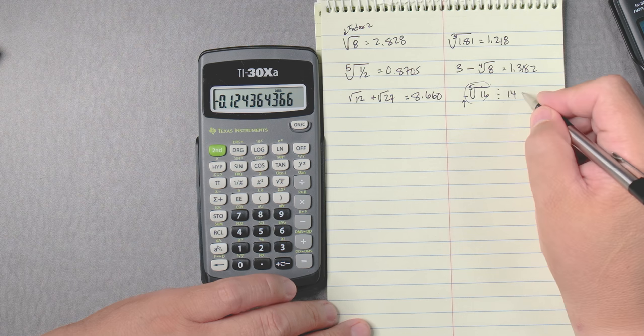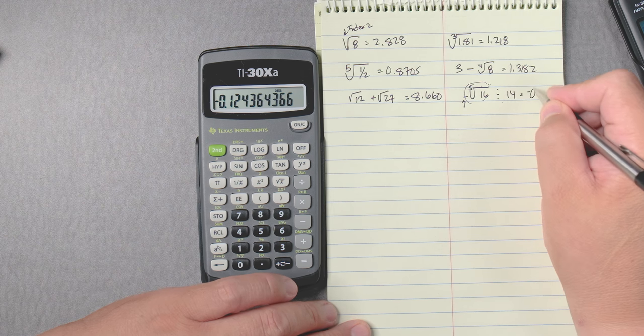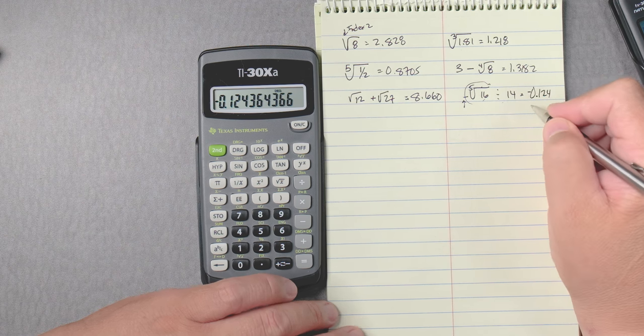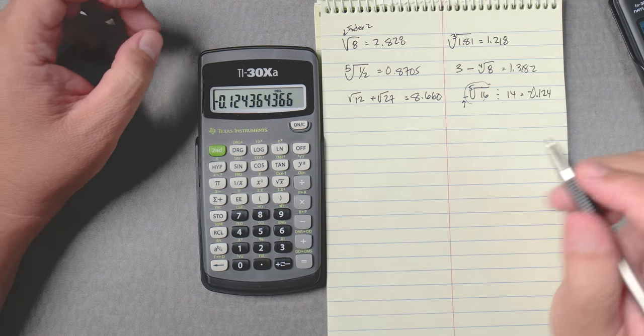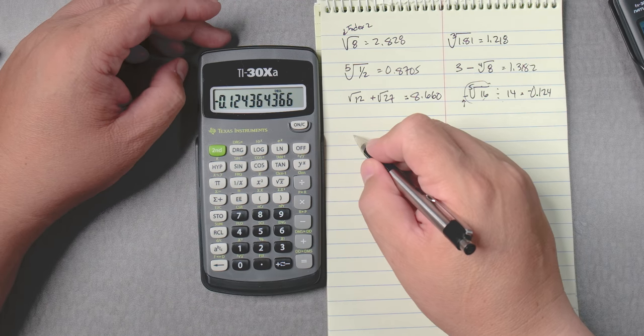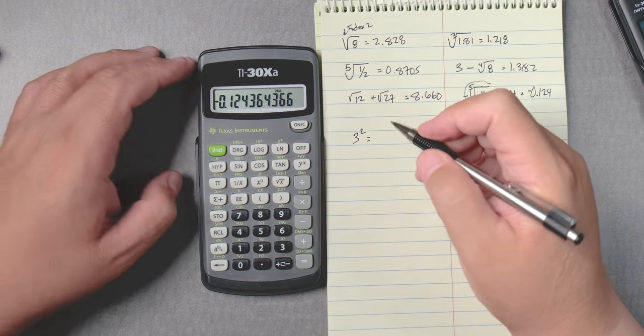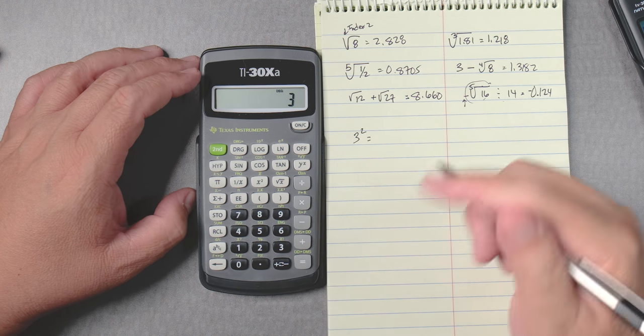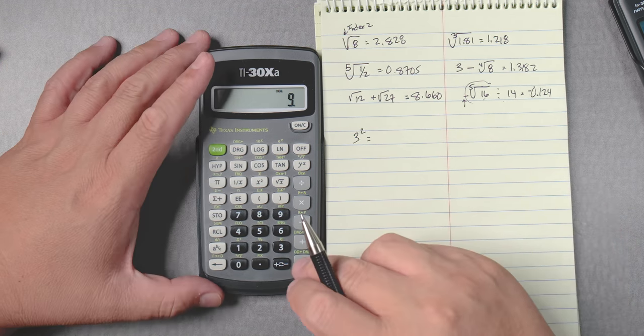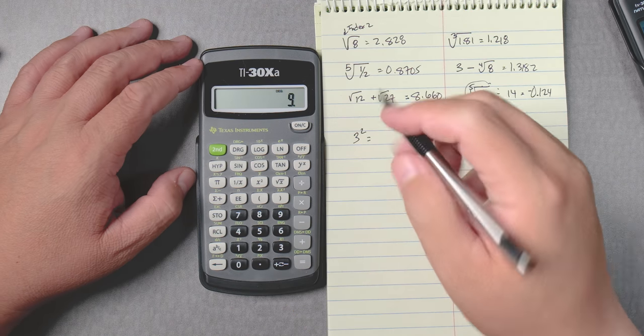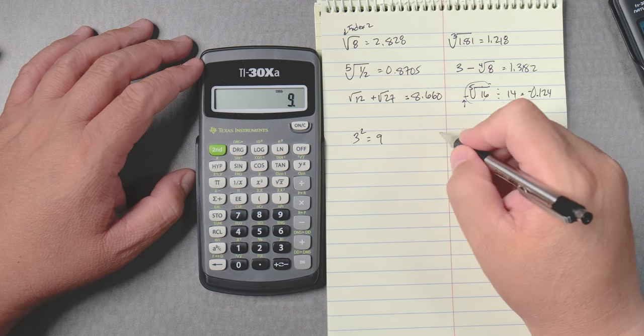Let's do some powers now. Things like 3 squared, we know that 3 and then we go squared, it automatically gives you an answer of 9 without even pressing equals.